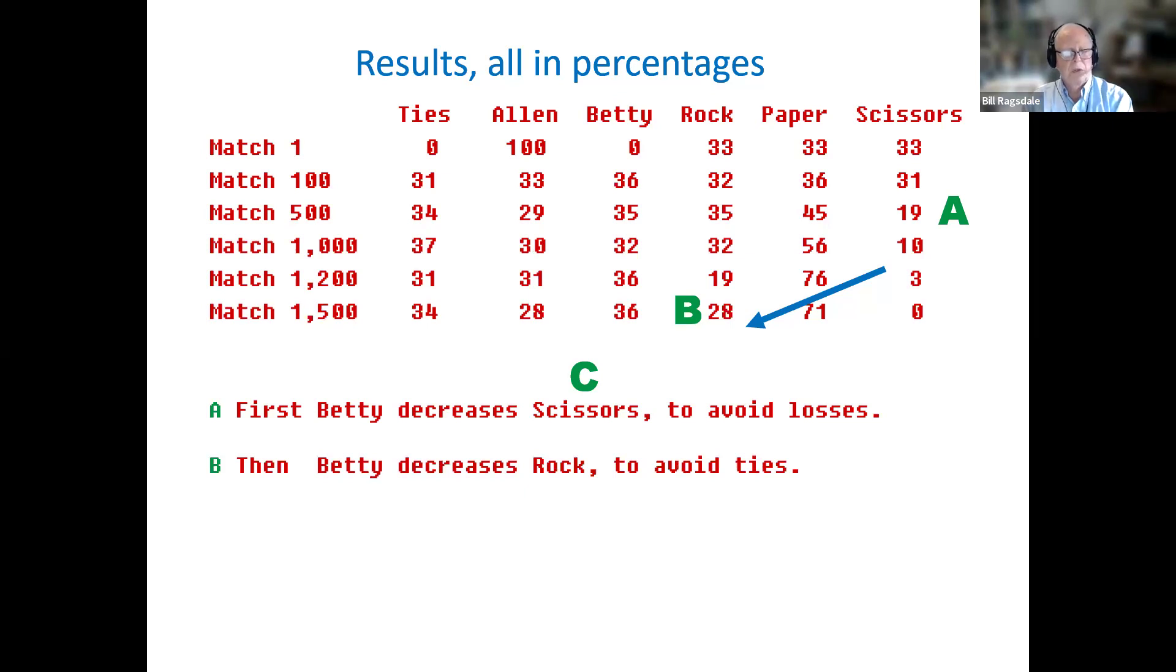We play up to the number of 1,500 matches. And we see what the B level, the Betty is now decreasing the number of plays on rock. Rock started out at 33% of the time, and now it's down to 28% of the time. In the paper column, we see that she's increased her probability of using paper to 71% of the time. And she has set the value of scissors zero, so she no longer plays scissors.